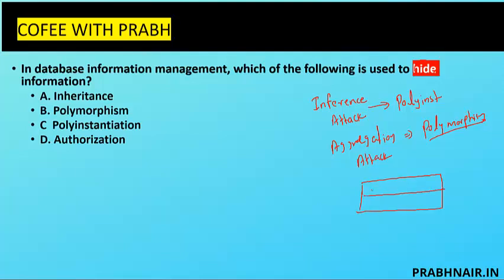We have a table with source, destination, and data. Source: Delhi, Destination: Mumbai, Data: Top Secret. Same table accessed by another user shows: Source: Delhi, Destination: Bangalore, Data: Secret. When the authorized high-clearance user logs in they see the real information; when a lower-clearance user logs in they see the alternate version. That user assumes the flight is going Delhi to Bangalore carrying sensor data, but in reality it's going Delhi to Mumbai carrying top secret data — this is how we create different versions of the same information.